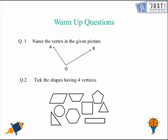In the first one, we need to name the vertex in the given picture. So, the name of the vertex in this picture is O. Vertex is basically the corner.